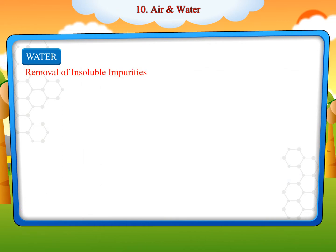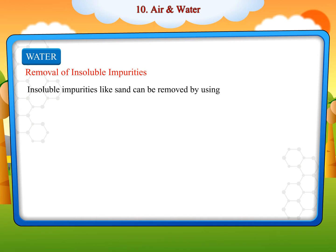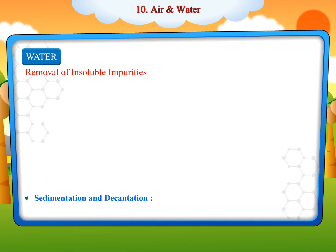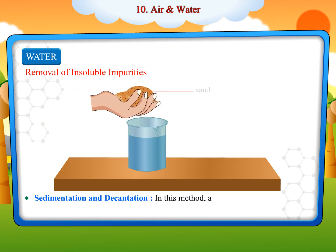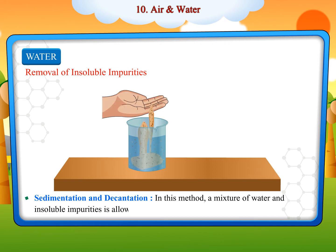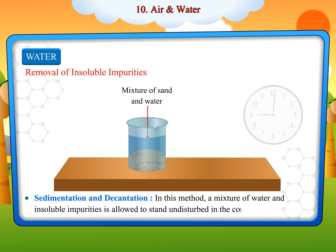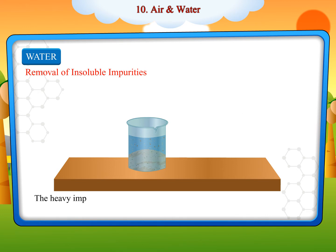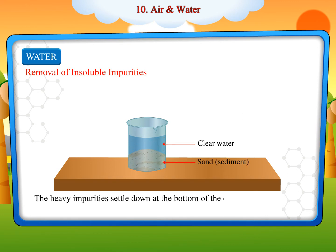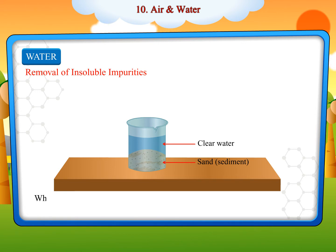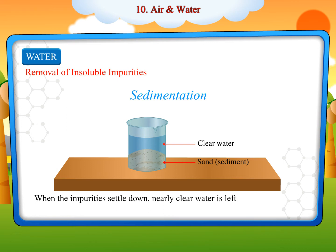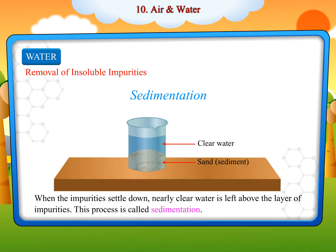Removal of insoluble impurities: in this method, a mixture of water and insoluble impurities is allowed to stand undisturbed in a container for some time. The heavy impurities settle down at the bottom of the container. This layer of impurities is called sediment. When the impurities settle down, nearly clear water is left above the layer of impurities. This process is called sedimentation.